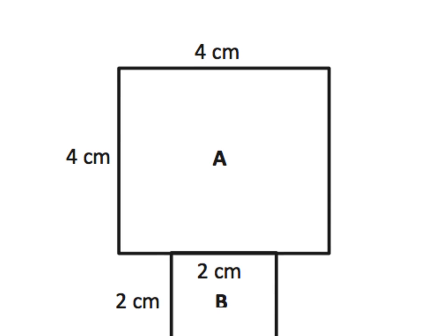So here's a rectangle, rectangle A, and you'll notice it's 4 by 4. So 4 plus 4 plus 4 plus 4. So a nice quick way of finding that perimeter is simply just doing 4 times 4, which is equal to 16. So the perimeter is 16.